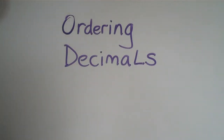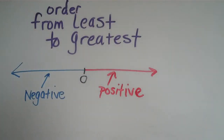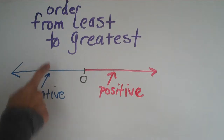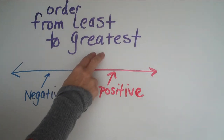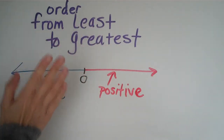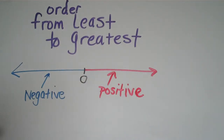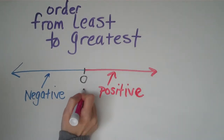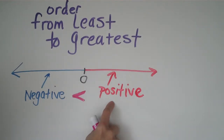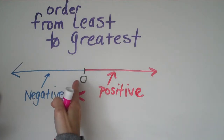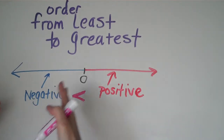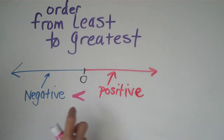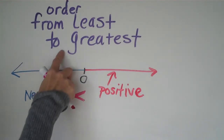Let's talk about ordering decimals. Most questions ask you to order from least to greatest — pay attention to that, because sometimes you get greatest to least. When ordering from least to greatest, a negative number will always be less than a positive number. Get the negatives on the left side at the lower end, and the positives on the right side. The negatives will always come first.